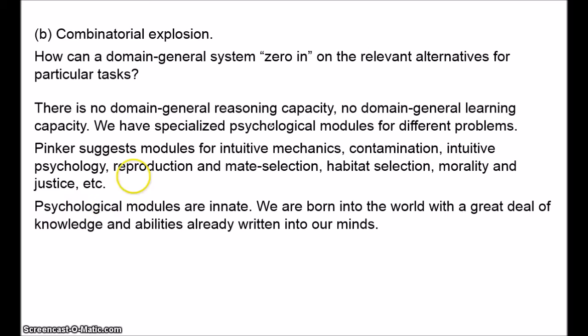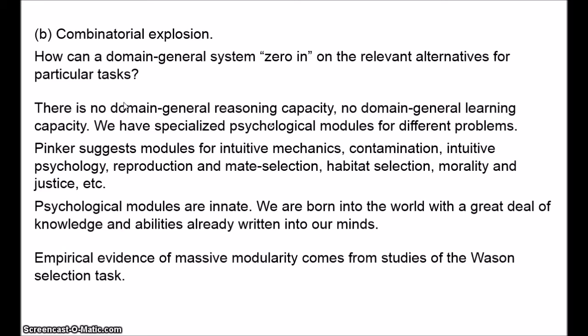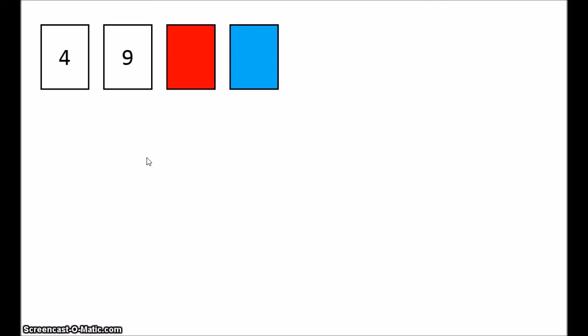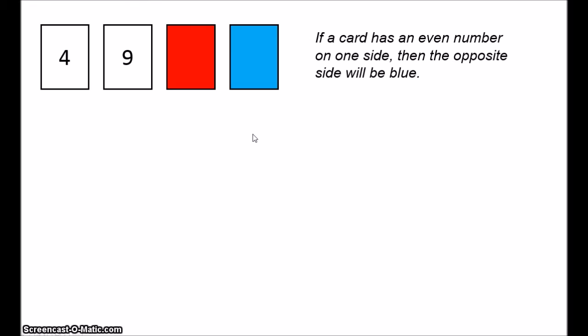Aside from general arguments, evolutionary psychologists have tried to produce empirical evidence for massive modularity. The most famous example concerns the Wason selection task — a simple logic puzzle. Here are four cards; each card has a number on one side and a patch of colour on the other. Consider this rule: if a card has an even number on one side, the opposite side will be blue. Which of these four cards do you have to turn over in order to test whether this rule holds? The vast majority of people get it wrong — humans are very bad at this task, despite its apparent simplicity.